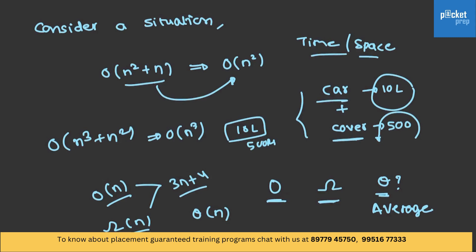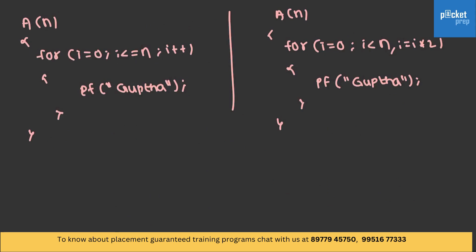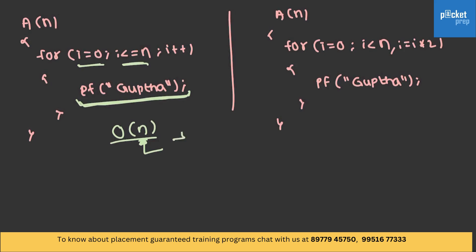Let's try to estimate how time complexity is calculated. Consider this example: a for loop running from 0 to n. The task inside the loop has to be performed. In the worst case it will be performed n times, and the best case is also n times. That also makes the average case n. So this loop has O(n) complexity.